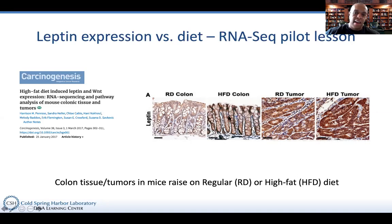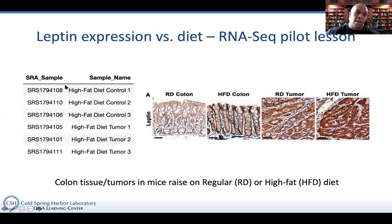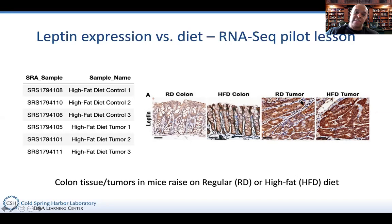We're going to look at RNA-seq data from three mice raised on a high-fat diet with regular colon tissue (the control), and three mice with high-fat diet plus tumor. We'll explain what the SRS sample numbers mean in a moment. This data is not data I produced — it came from this paper, but it's data you could retrieve from NCBI.